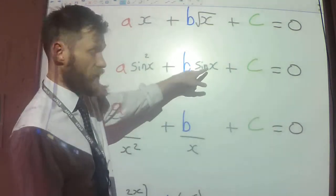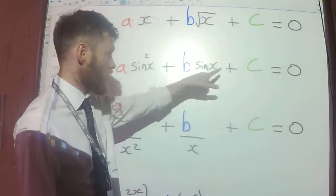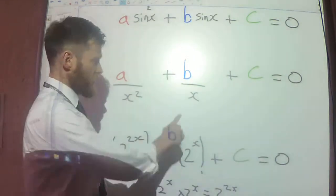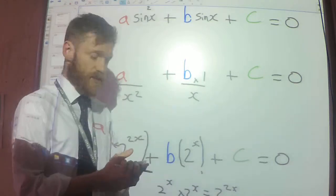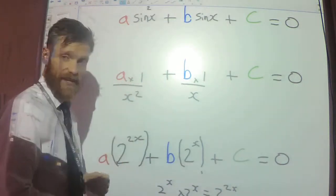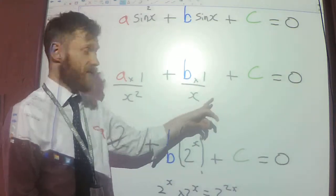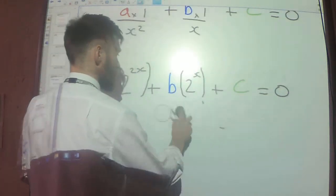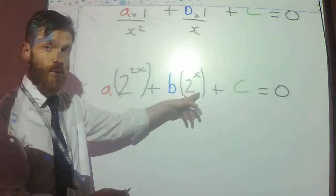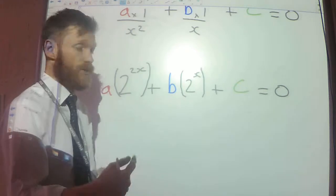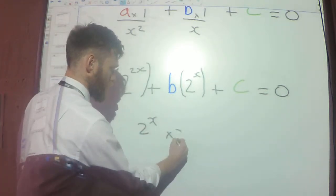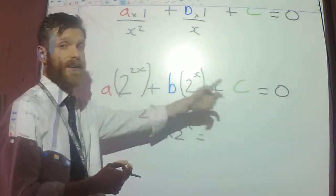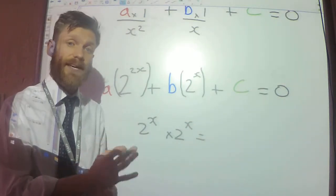A few more examples. You can see here I've got sin x, this is squared, constant on the end — so that's a hidden quadratic. Here, you can imagine this as being b times 1 over x, and this is a times 1 over x squared. When I square the 1 over x, I get 1 over x squared. Constant on the end. And finally, this one on the end here, the 2 to the power x: when I square that, 2 to the power x times 2 to the power x — you add the powers and you get 2 to the power 2x at the front. So I square that, I get that, and I've got my constant on the end. So all of these are examples of what I would call hidden quadratics.